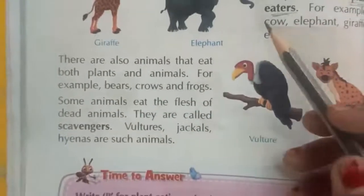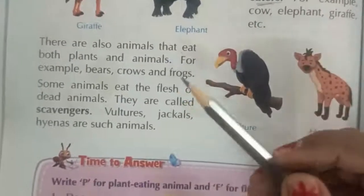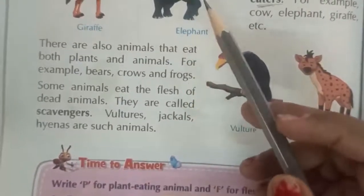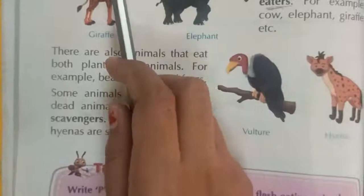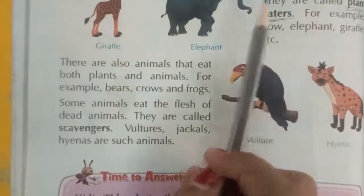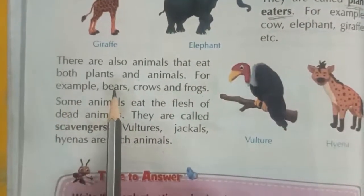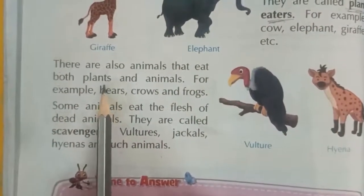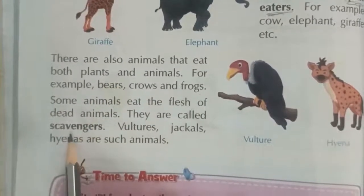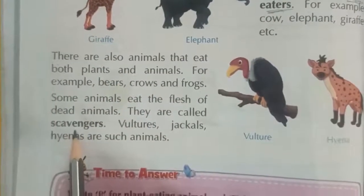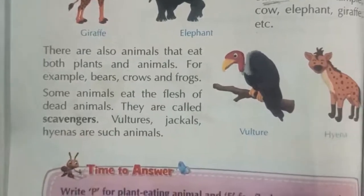So, animals are divided into four groups depending on their food: first, flesh eaters; second, plant eaters; third, animals that eat both plants and animals; and fourth, scavengers.